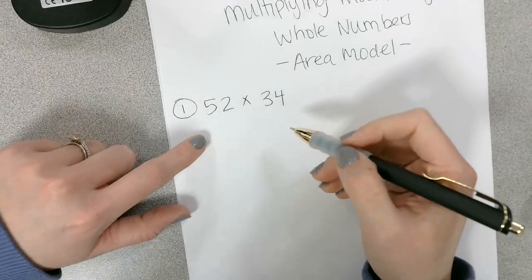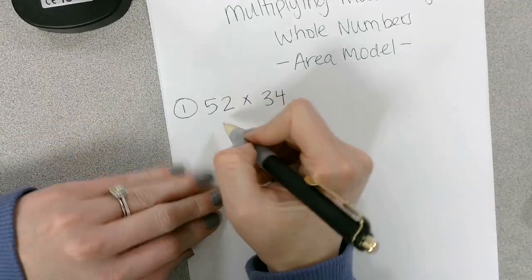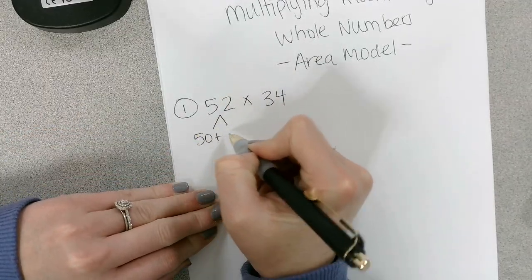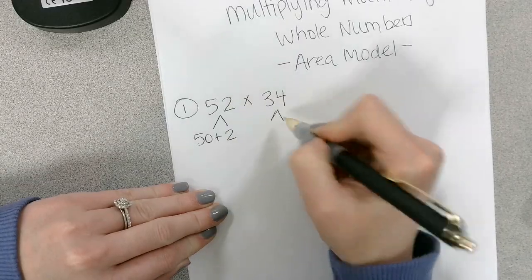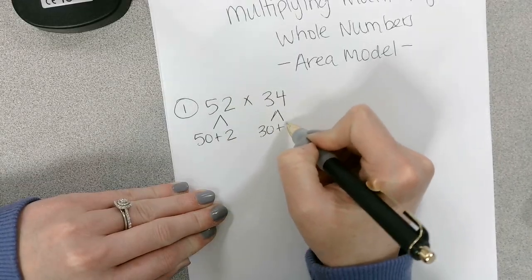So the first thing that we have to do is break these two numbers apart according to place value. So this would be 50 plus 2, and this would be 30 plus 4.